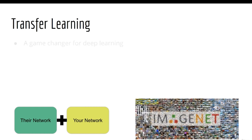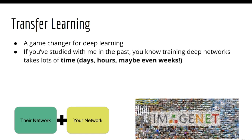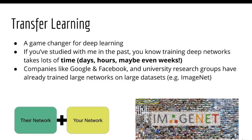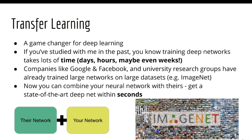The next application we'll discuss was a game-changer for deep learning: transfer learning. Training a deep neural network takes a lot of time — you might end up waiting hours, days, or possibly even weeks. Companies like Google or Facebook, or university research groups, will train large neural networks on humongous datasets such as ImageNet, which contains over a million images. Using transfer learning, we can take just a part of their neural network and combine it with our own neural network designed for a specific task. The results have shown that this is an easy and fast method of building state-of-the-art deep learning models — in just a few seconds, you can integrate the power of bleeding-edge neural networks into your own applications.